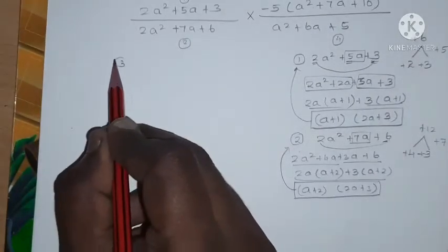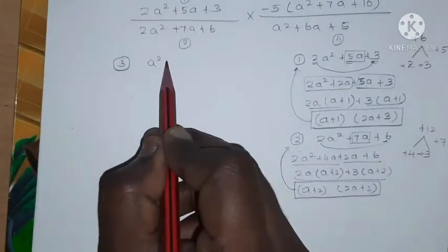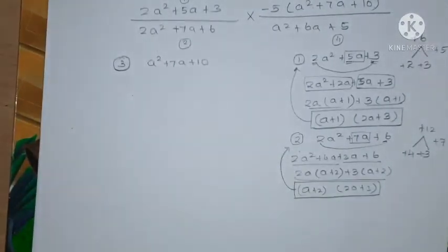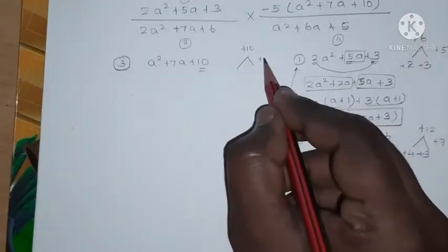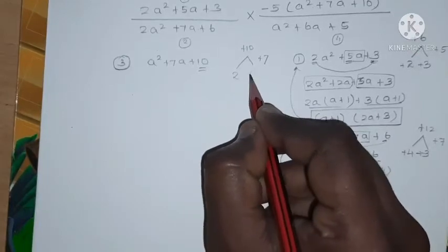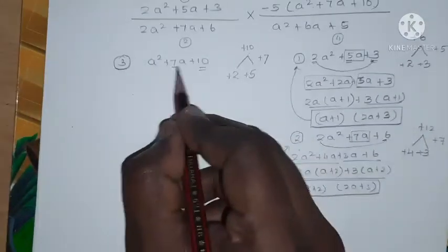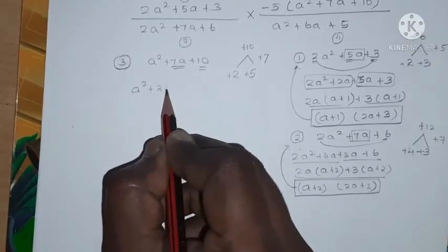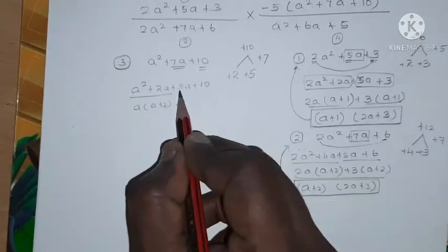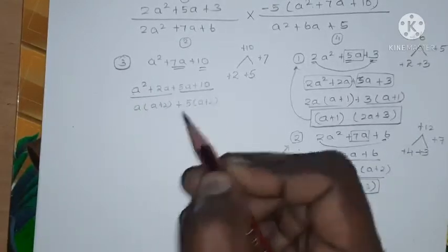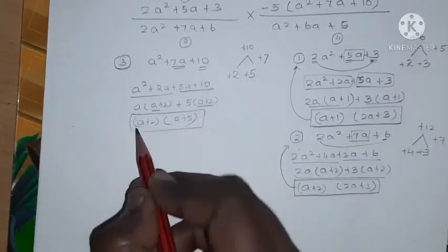Next, the factors of polynomial 3: a squared plus 7a plus 10. Two numbers that multiply to plus 10 and add to plus 7 are 2 and 5. So 7a splits into 2a plus 5a: a squared plus 2a plus 5a plus 10. Taking a common gives a(a+2), and taking 5 common gives 5(a+2). So a plus 2 is common, giving factors (a+2)(a+5).